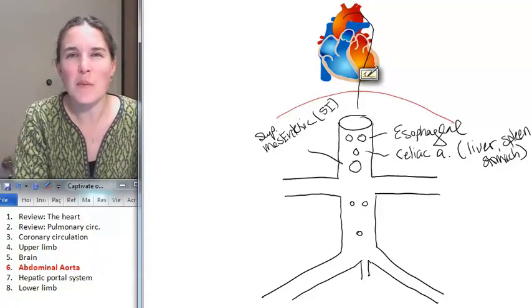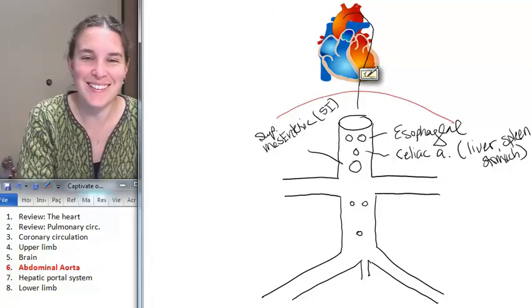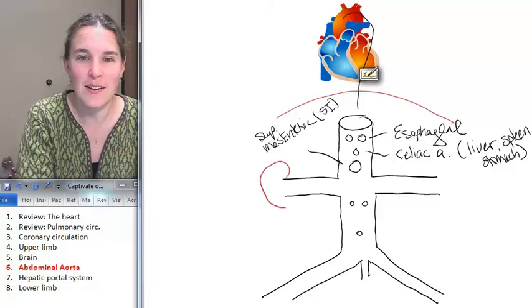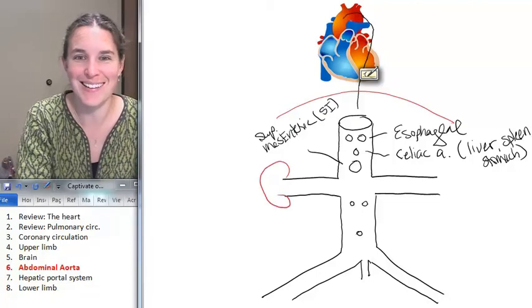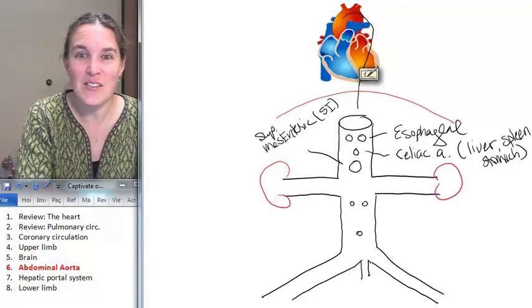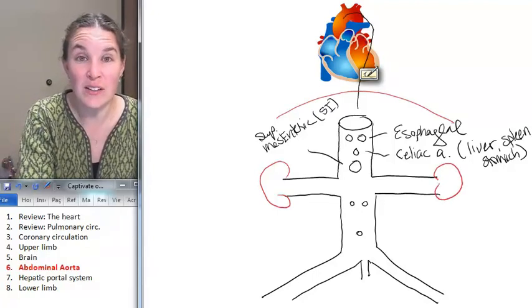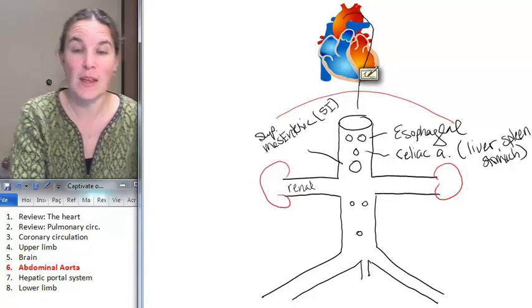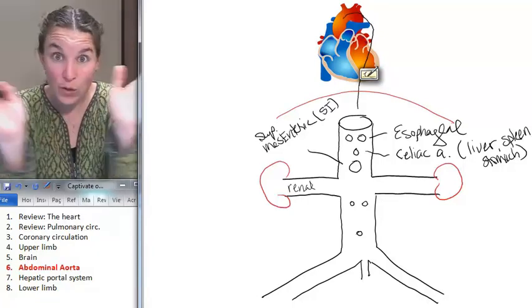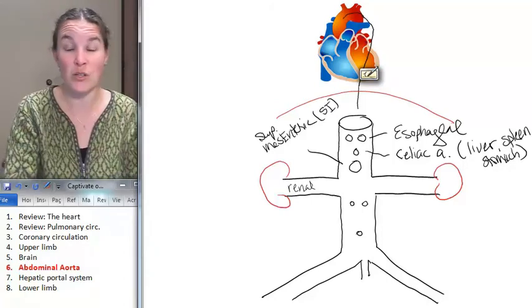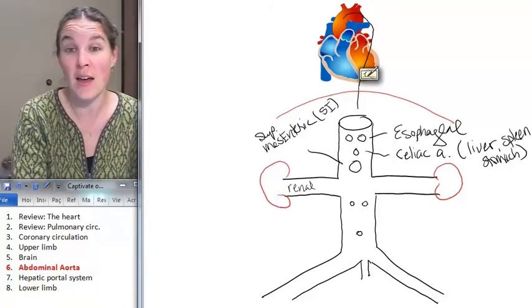Who do you think the big guys are? I'm going to give you a hint. It's a kidney. So these arteries are renal arteries. And you can imagine that if we're fueling the kidneys with renal arteries, we're actually going to return the blood via renal veins.